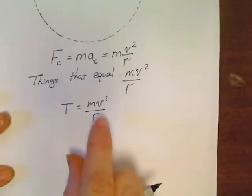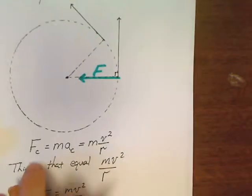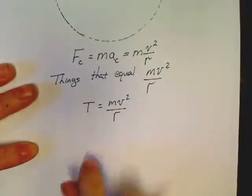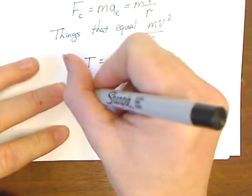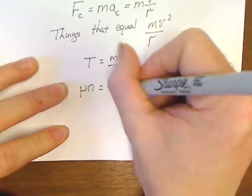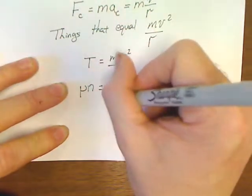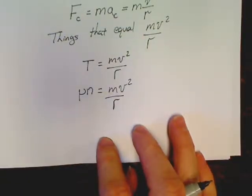What about a car in a curve? What about if this was a car in a curve? What holds a car on the road? What force would hold a car on the road? Well, it's friction would hold that car on the road. So we can come back and say friction or mu N would be equal to M V squared over R.